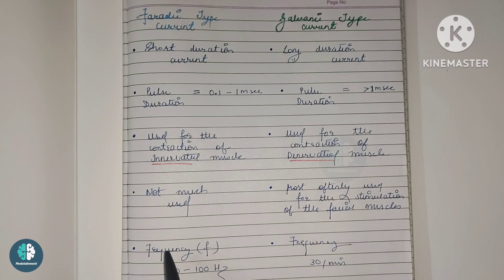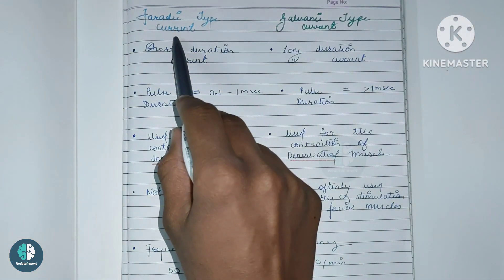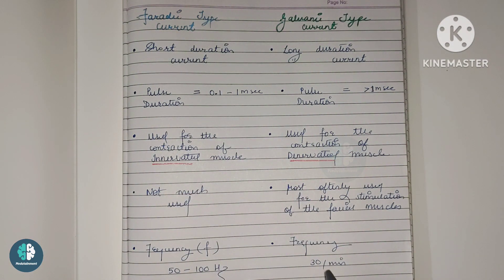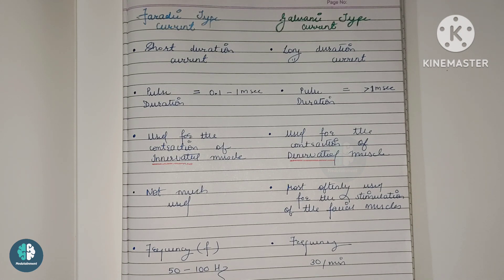The next difference is the frequency. The frequency ranges from 50 to 100 hertz in the case of the faradic type current. For the galvanic type, the frequency is 30 per minute. The galvanic type takes more time because it is a long duration current used for denervated muscles, while the faradic is used for innervated muscles.